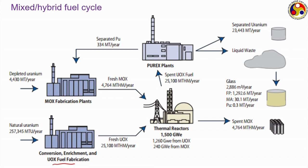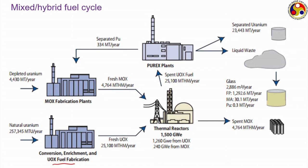We shall be discussing further about fuel cycles, fuel processing, and fast breeder reactors, which generally require quite high enrichment levels — around 10 to 15 percent — compared to thermal reactors which require only 1.5 to 5 percent. In the next class we shall discuss the process of enrichment before returning to the topic of breeding. Thank you very much.